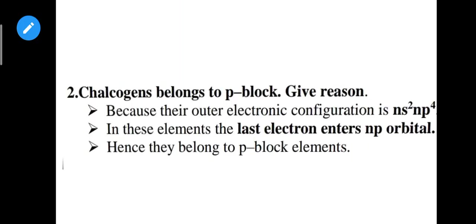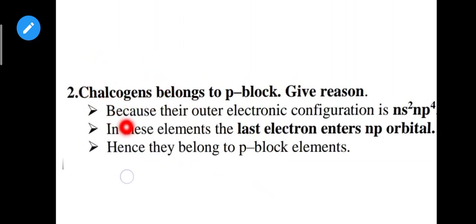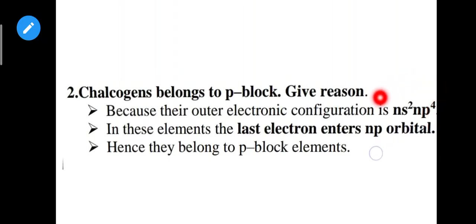Next: chalcogens belong to p-block elements. Chalcogens refer to group 16 elements. The outer electronic configuration of group 16 is ns2 np4. After noting the outer electronic configuration, we can find this in the Union.